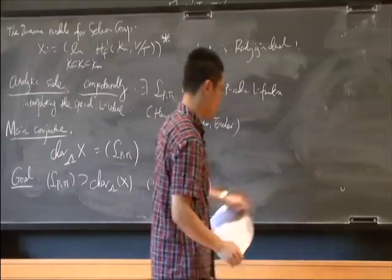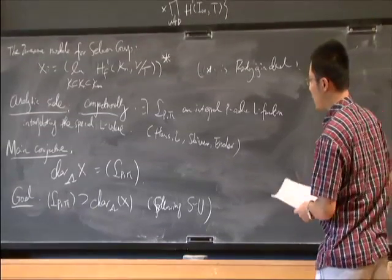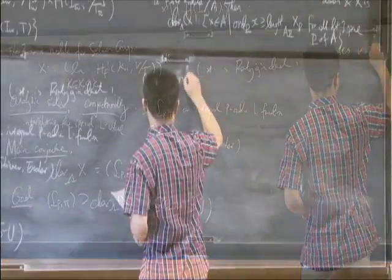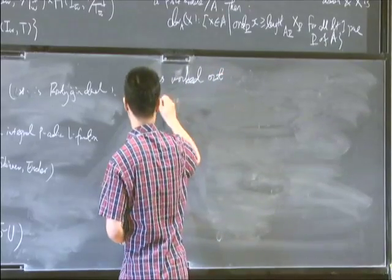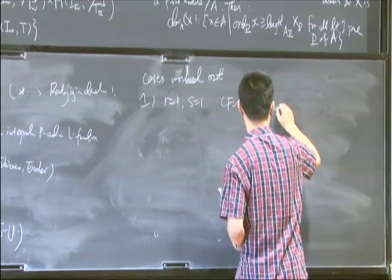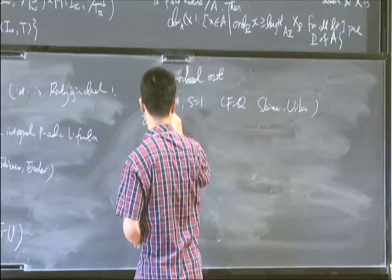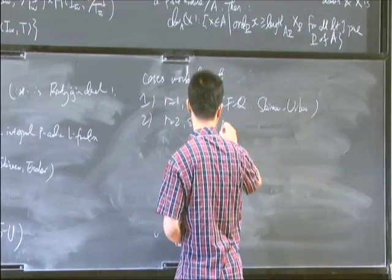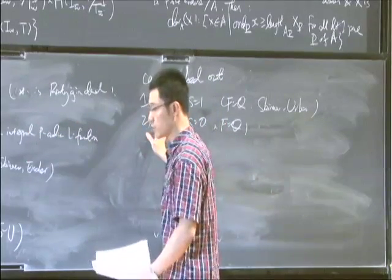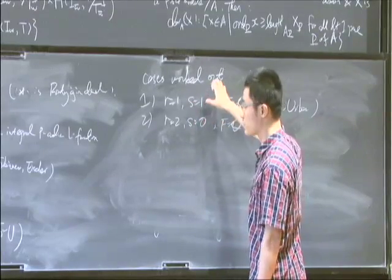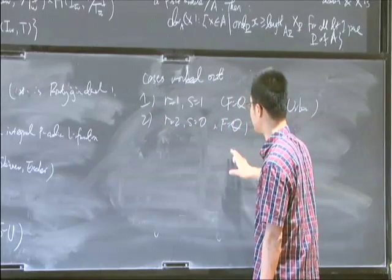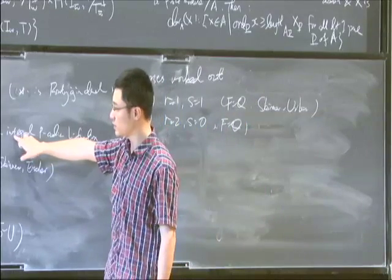In fact, I have only one minute, so I will talk about what have been done. The cases worked out: First, R equals one and S equals one. In the case when F equals Q, this is the situation of Skinner and Urban. The second one is R equals two and S equals zero, F equals Q. We are able to prove this containment for two kinds of different Rankin-Selberg p-adic L-functions, both for a general modular form and a CM form. In the first case, the CM form has lower weight, and in the second case, the CM form has higher weight. I should also mention that because of the Gorenstein condition mentioned here, our result has some technical local conditions.